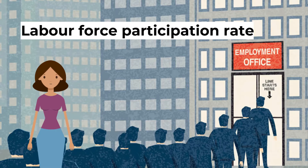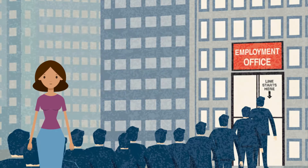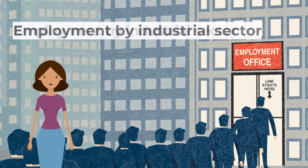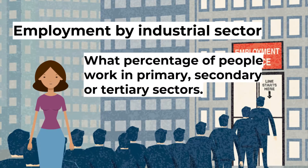Next, the labor force participation rate refers to the number of people available for work as a percentage of the total population that is of working age. Employment by industrial sector is a measure of what percentage of people work in primary, secondary, or tertiary sectors — another way to think about this is the number of people that work in agriculture, manufacturing, and services.